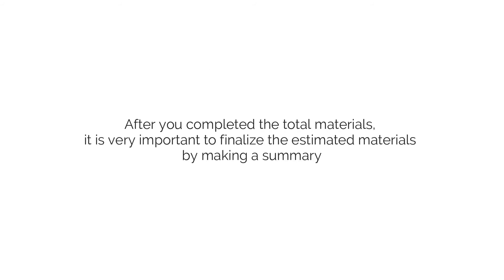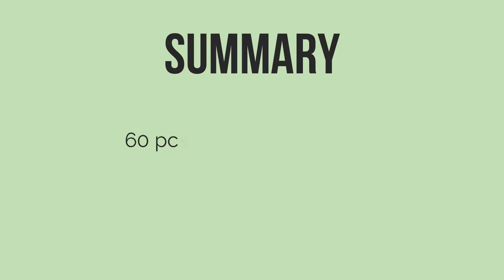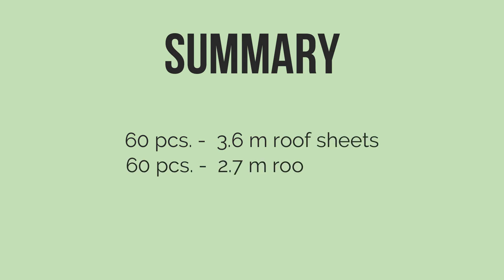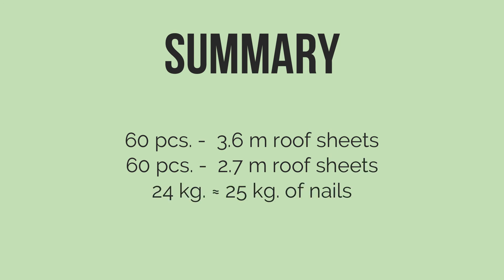After completing the total materials, it is very important to finalize the estimated materials by making a summary, so you could multiply the cost of each material depending on your supplier. From this problem, we obtained: 60 pieces of 3.6-meter corrugated roof sheets, 60 pieces of 2.7-meter corrugated roof sheets, and 24 kilograms (approximately 25 kilograms) of nails.